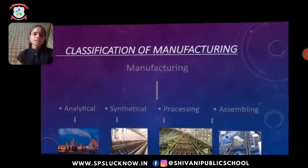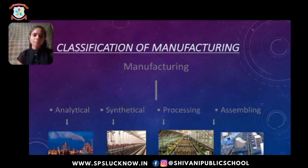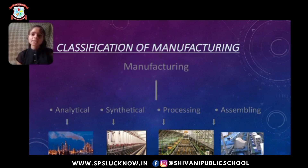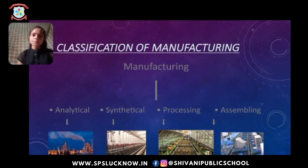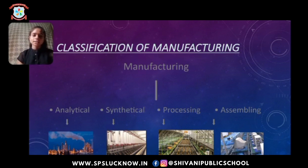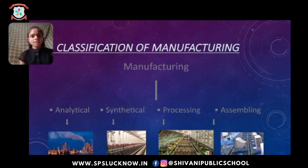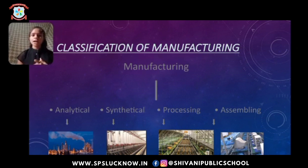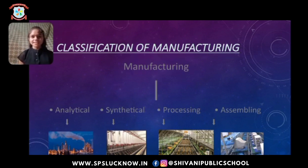Next is the classification of manufacturing. Manufacturing is classified into four main parts: analytical, synthetical, processing, and assembling. Analytical industries analyze and separate different elements from the same materials, as in oil refineries, petroleum, etc. Synthetical industries combine various ingredients to make a new product, for example, cement. Processing industries involve successive stages for manufacturing finished products, for example, sugar and paper. Assembling industries assemble different component parts to make a new product, for example, mobile phones, televisions, cars, etc. Thank you so much.